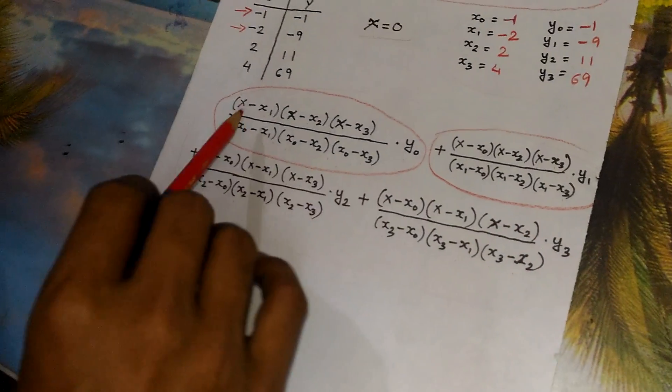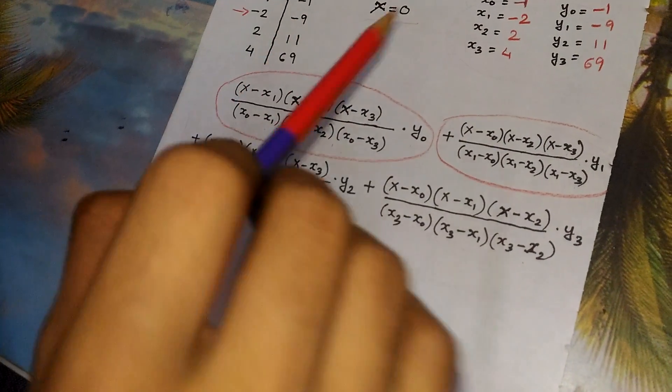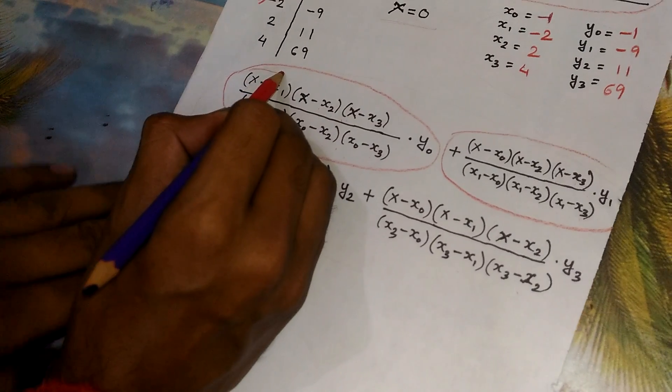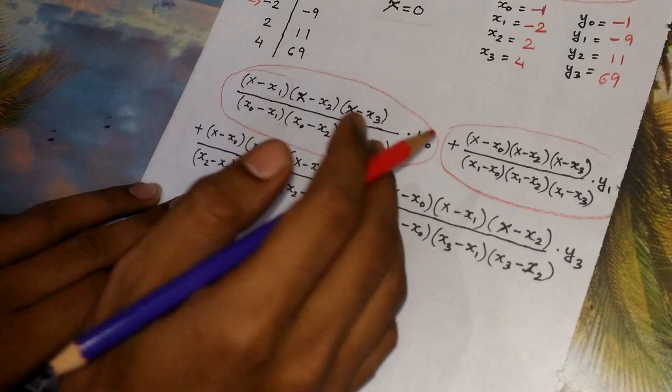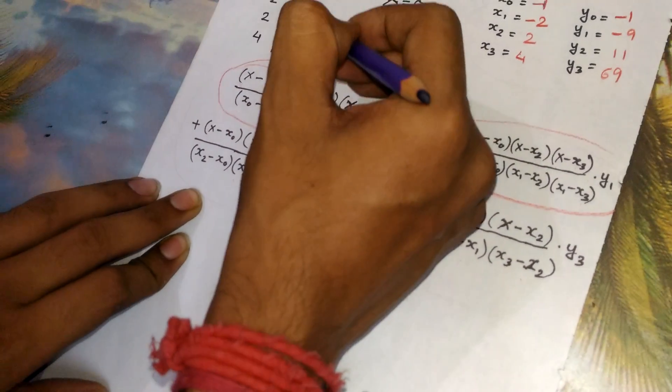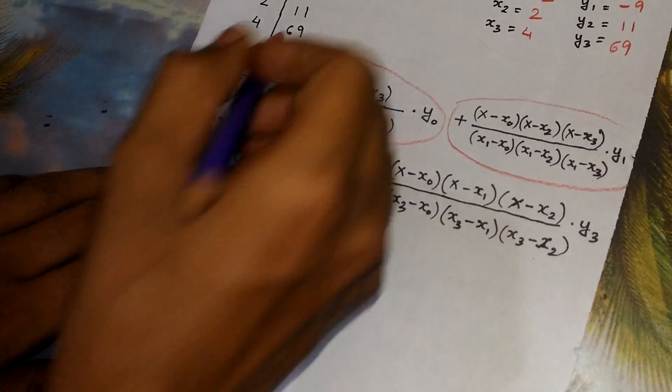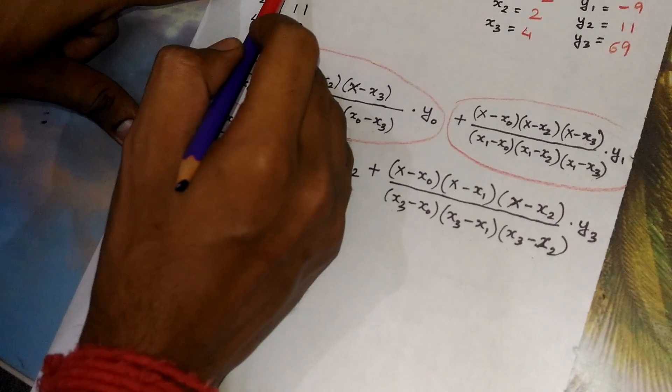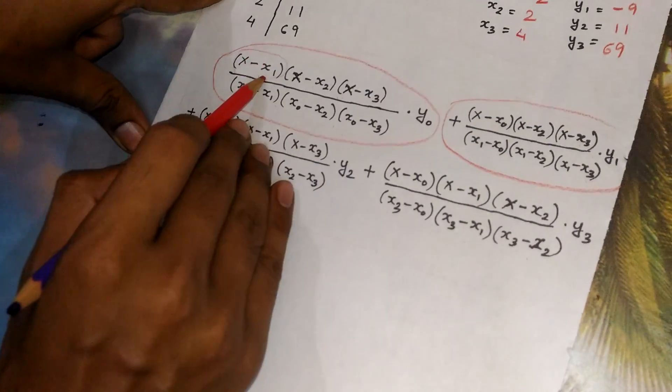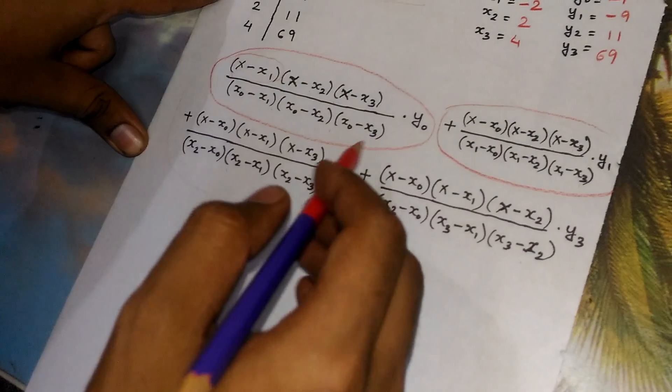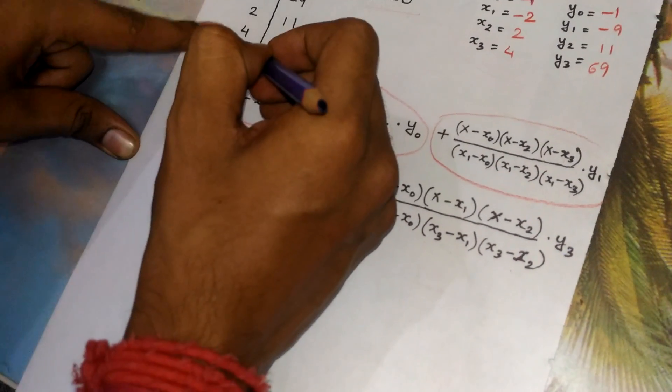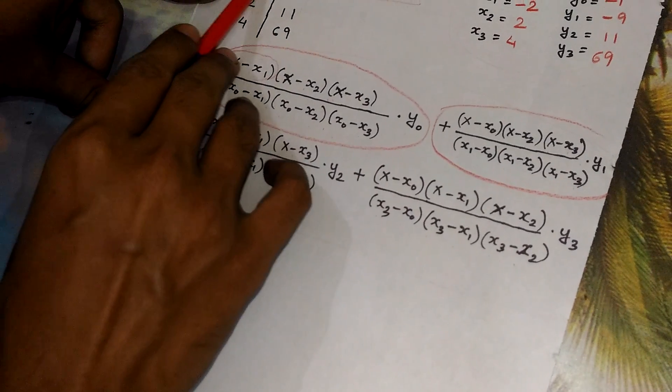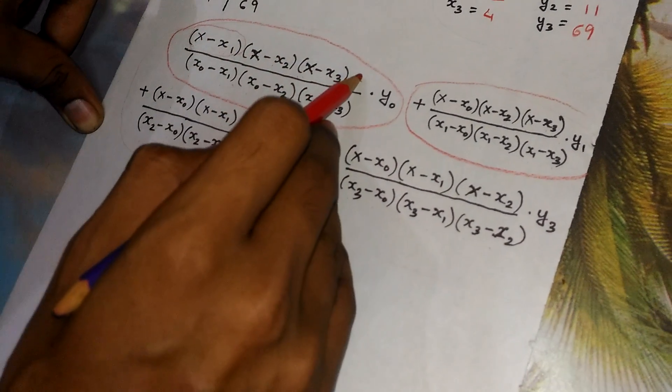Now in this formula for each step, the number of these terms depends on the number of elements given in the table. For example here there are 4 elements. So one I have taken as a pivot and remaining are 3, so there are 3 terms. Similarly if it was 5 elements in the table, we have taken 1 element as a pivot, so there would be 4 terms in the numerator.